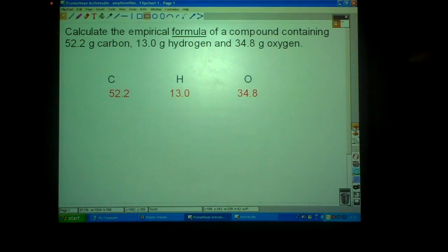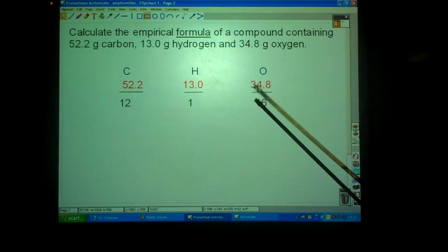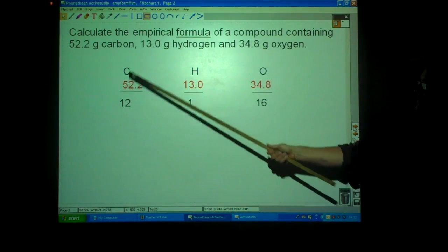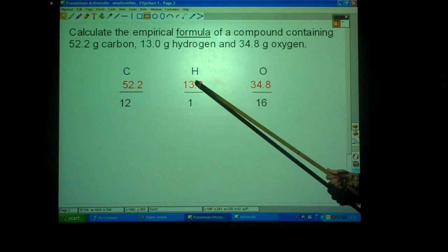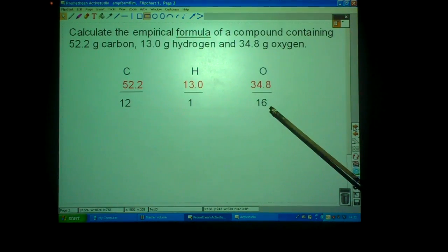You then divide them by the atomic mass from the periodic table. This will be given to you in the question. So, 52 grams of carbon divided by 12, 13 grams of hydrogen divided by 1, 34.8 grams of oxygen divided by 16.